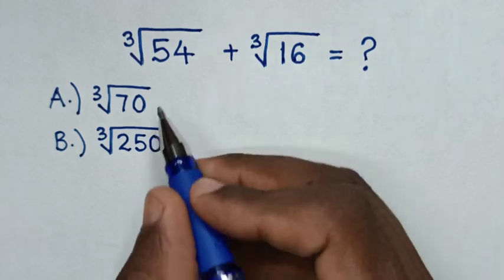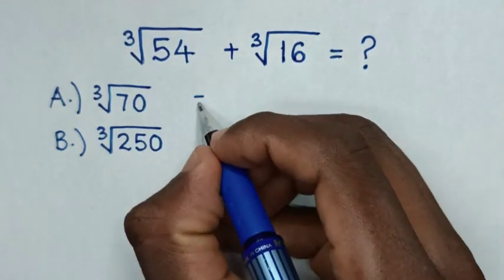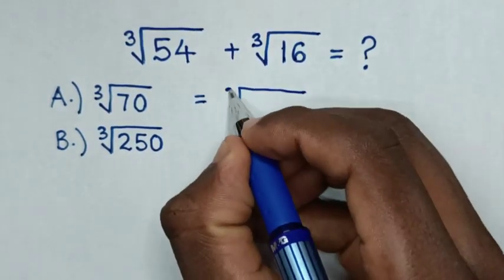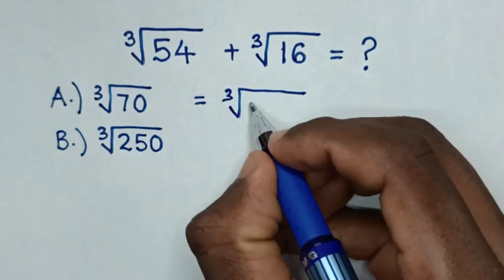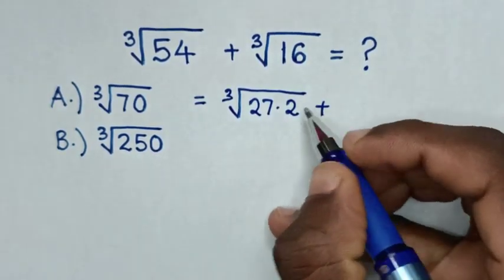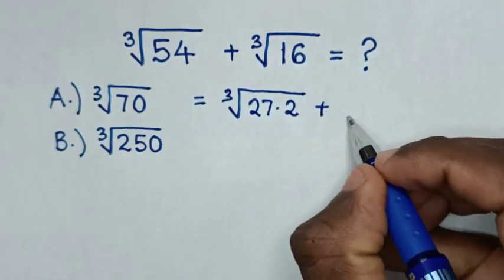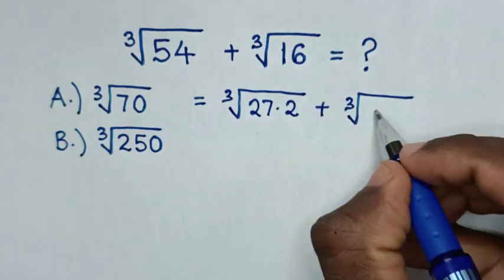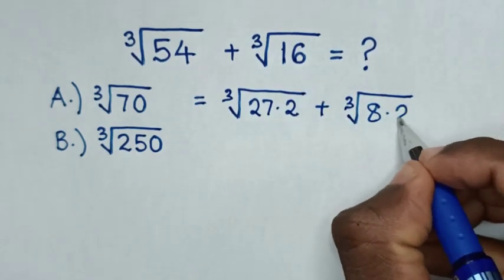So from this expression, it will be equal to cube root of 54, which is the same as cube root of 27 times 2, plus cube root of 16, which is the same as cube root of 8 times 2.